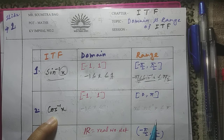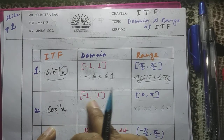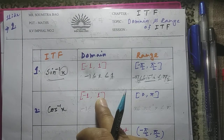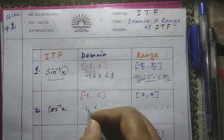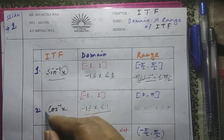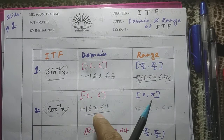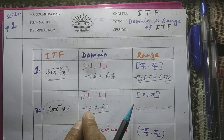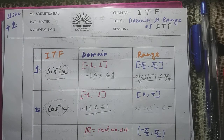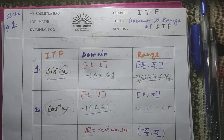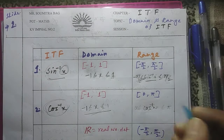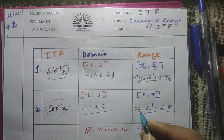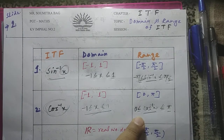Now let us come to the second ITF, that is cos inverse x. Here also, the domain is [-1, 1], like the previous ITF — meaning all values of x lie between -1 and 1, or x may be equal to 1 or equal to -1, and then the function will be totally valid. The range is [0, π] — meaning all values of cos inverse x will be lying between 0 to π. The maximum value of cos inverse x is π, and the minimum is 0.